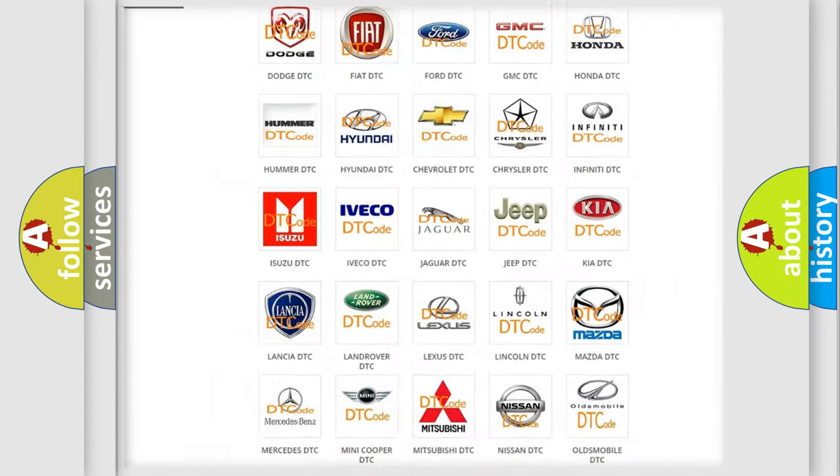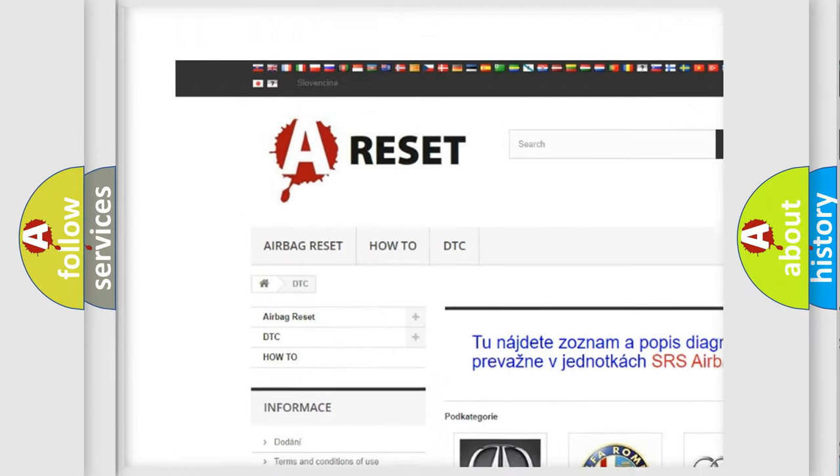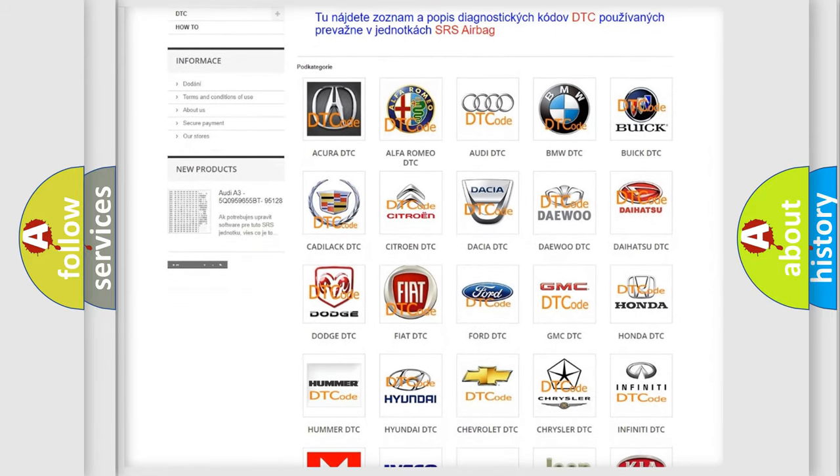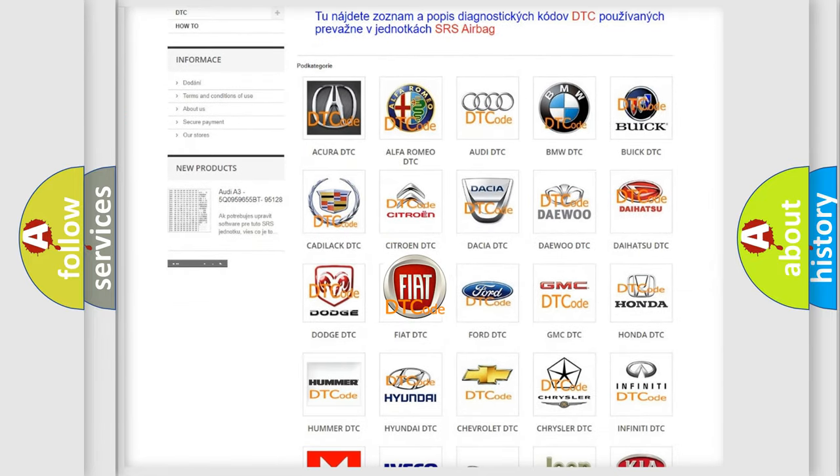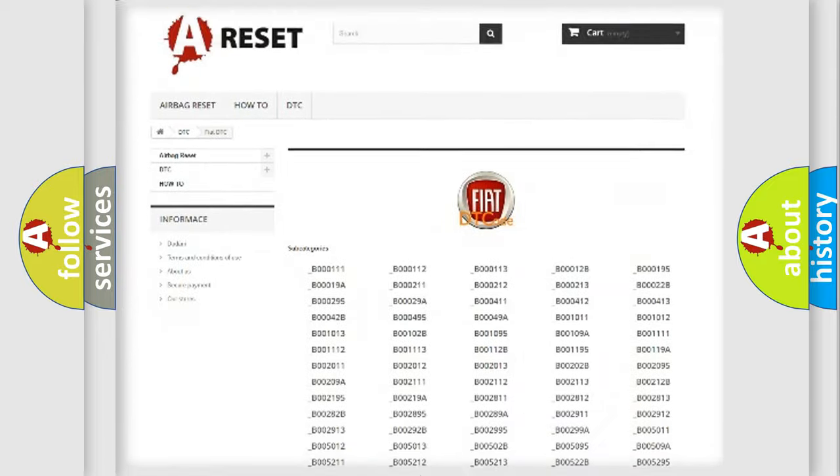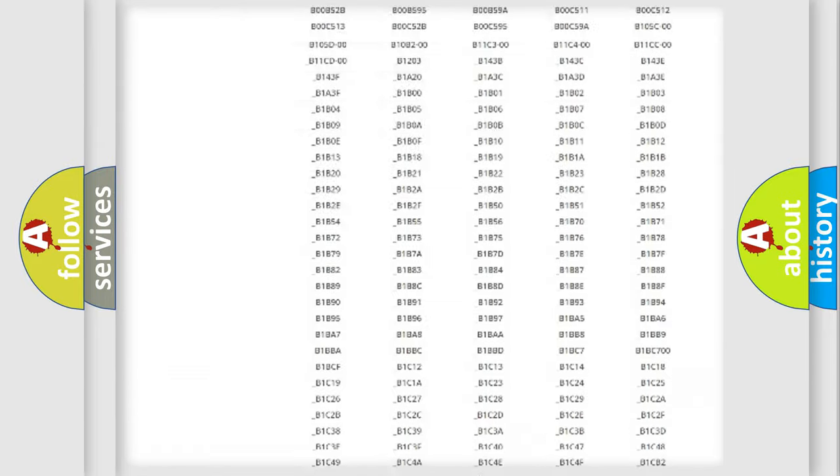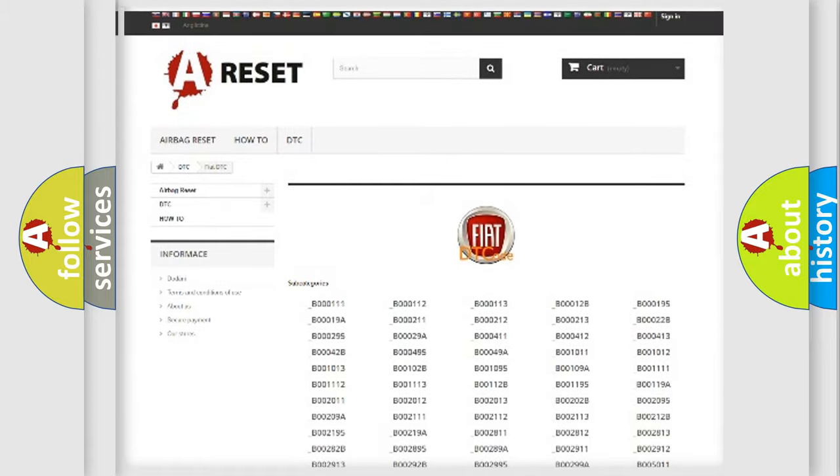Our website airbagreset.sk produces useful videos for you. You do not have to go through the OBD2 protocol anymore to know how to troubleshoot any car breakdown. You will find all the diagnostic codes that can be diagnosed in Fiat vehicles.